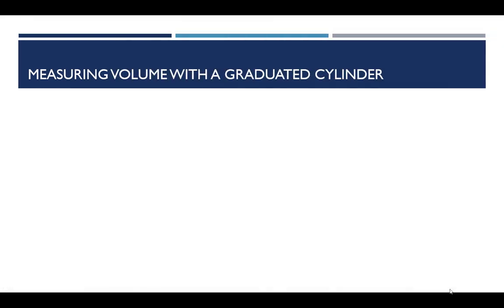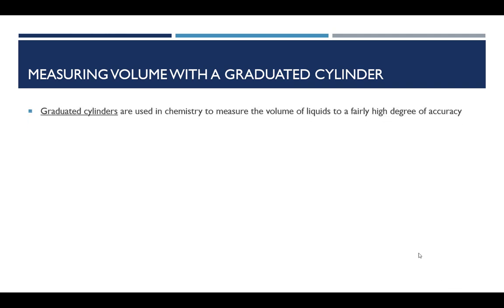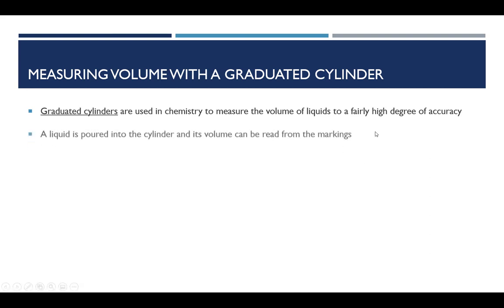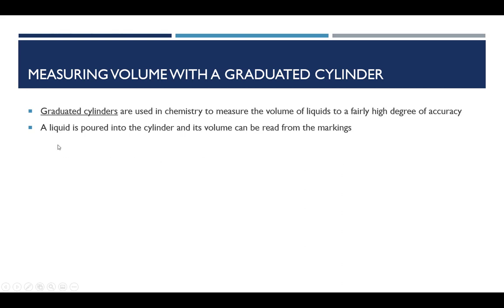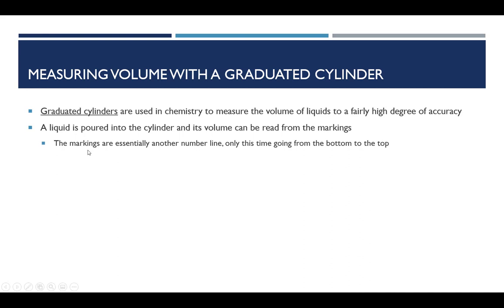Now we turn our attention to measuring volume. The principal device we are going to use to measure volume is called the graduated cylinder. It does a reasonably good job of measuring the volume of liquids — not to the highest accuracy achievable, but to a level that's very good for most of what we want to do. To measure the volume of a liquid, we simply pour it into a graduated cylinder. The graduations — that's why it gets the name graduated — are the markings on the side, and we can read those markings to figure out the volumes.